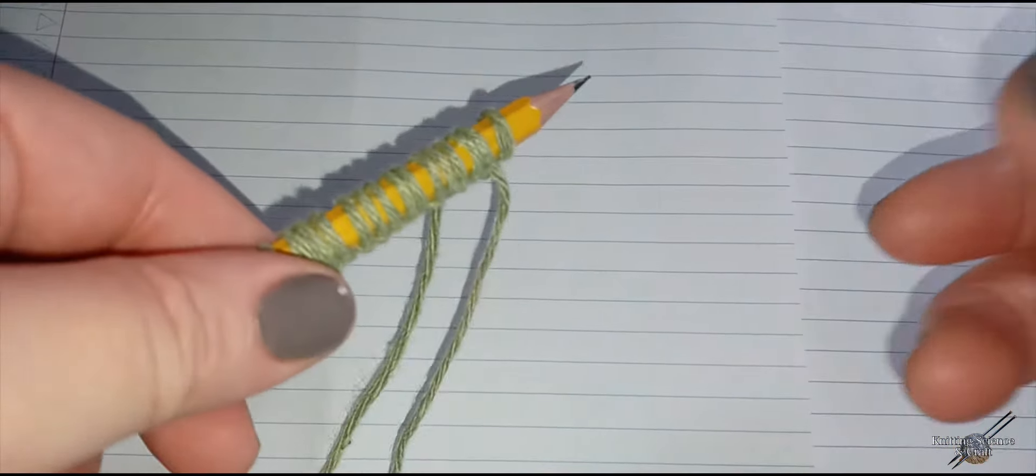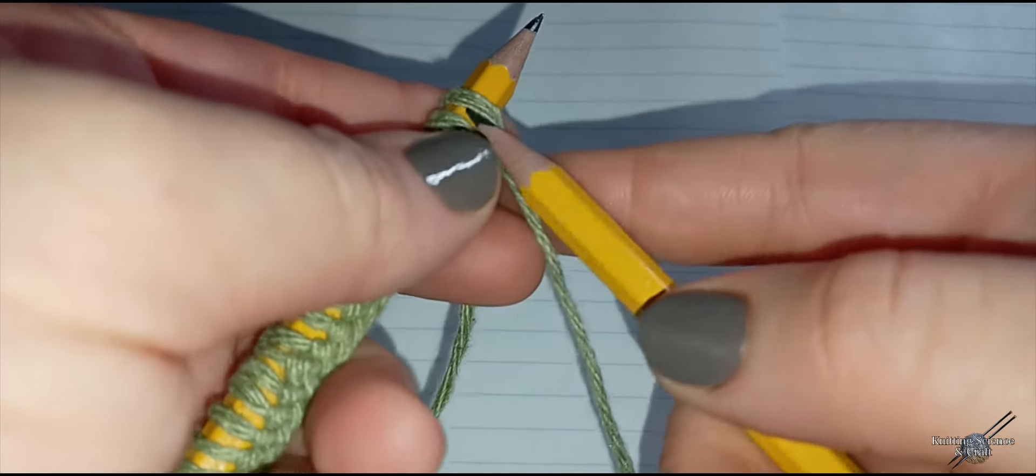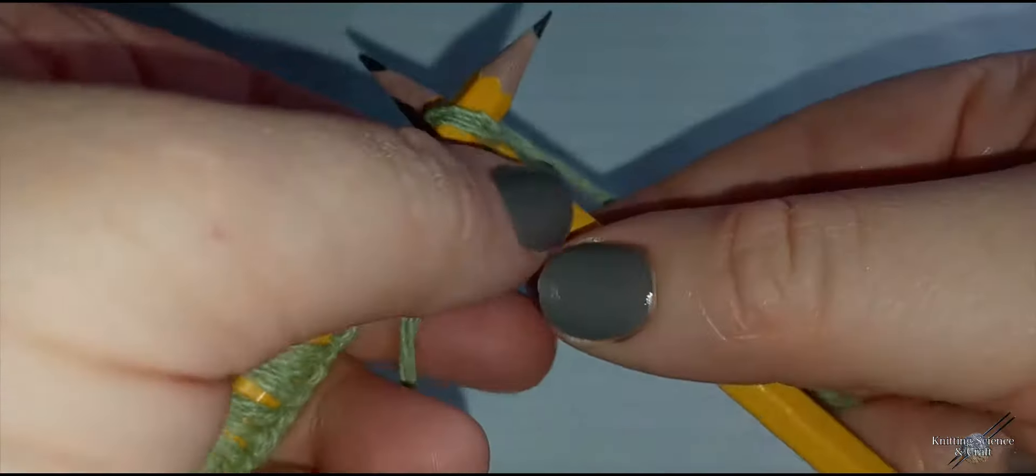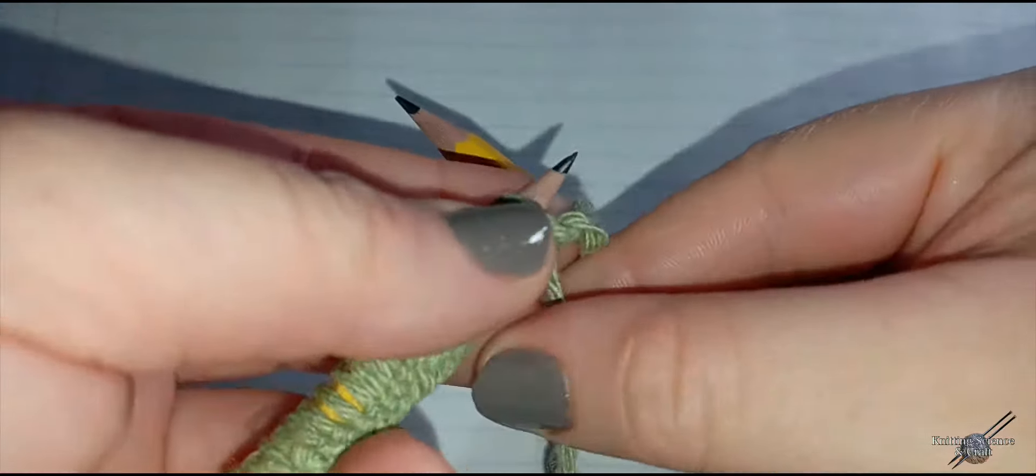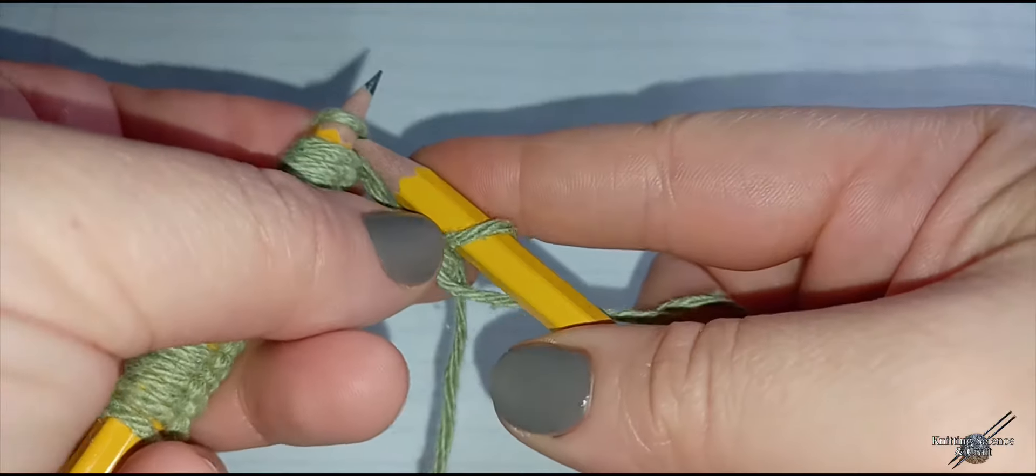Now we're going to work our first row of knit stitch. First you're going to insert your right hand pencil under your left hand pencil, wrap the yarn around, pull it under and off your left hand pencil. And we're going to continue in the same manner to the end of the row.